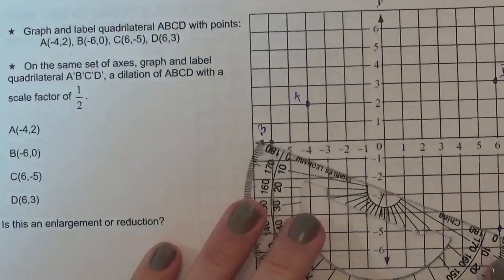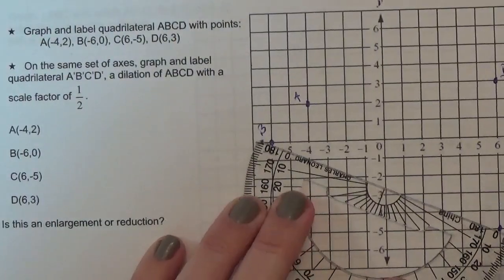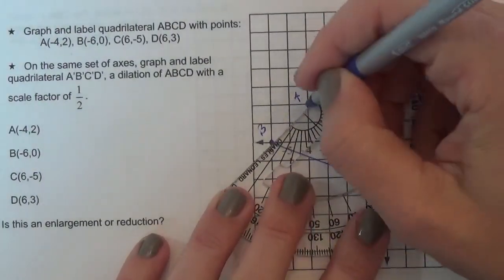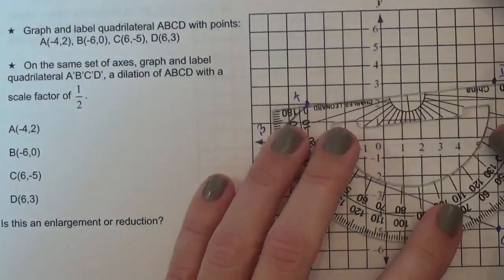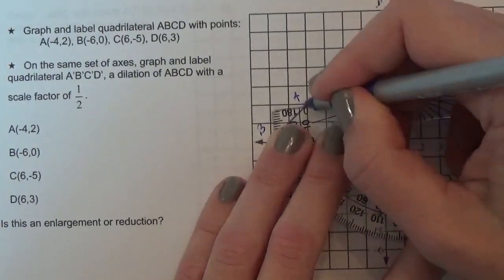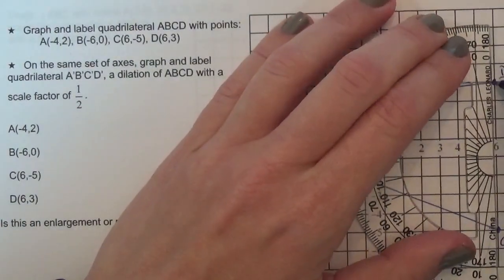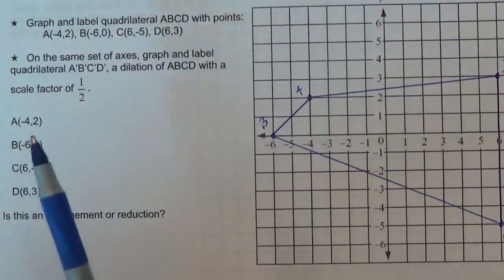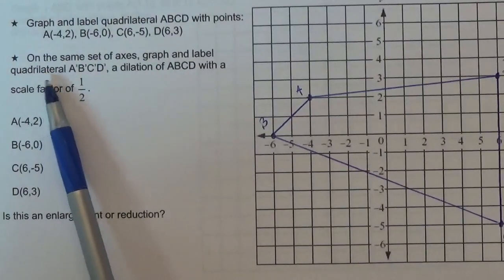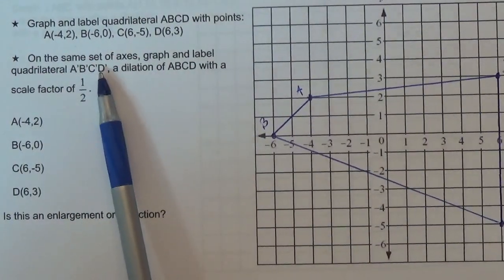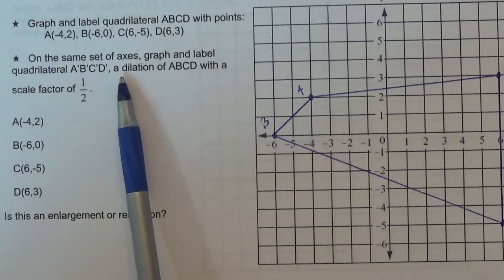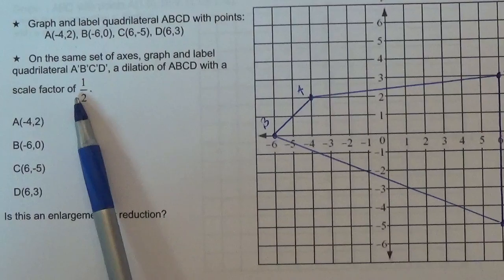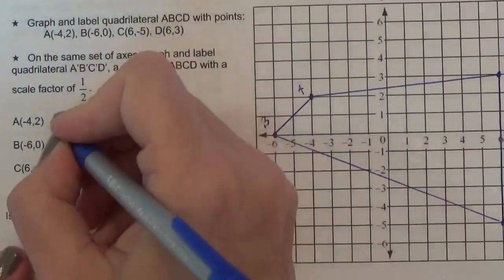Oh boy, taking up the whole page here. Let's connect these. There we go, straight up and down. Now on the same set of axes, graph and label quadrilateral A', B', C', D' after a dilation of a half. You know what, I am going to do the math first.